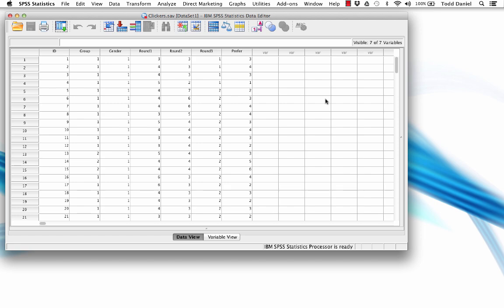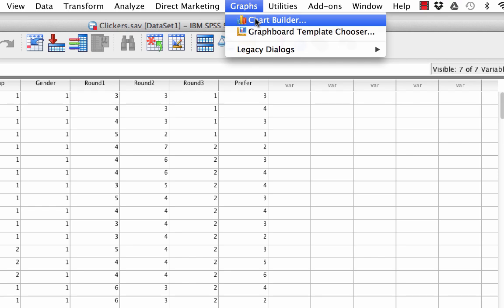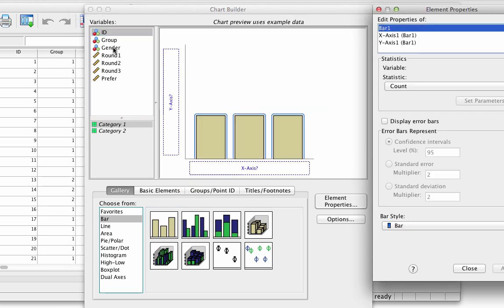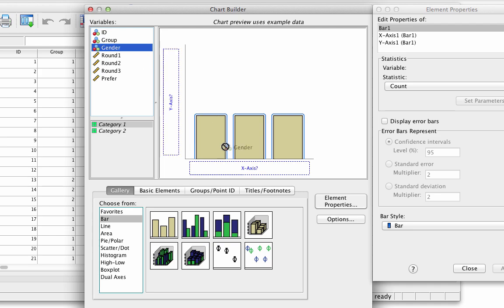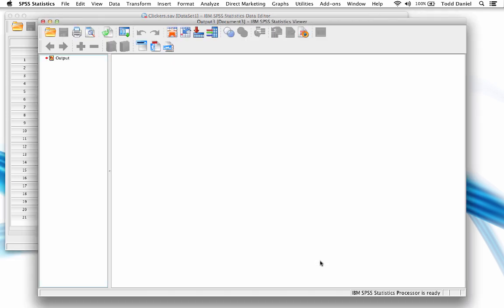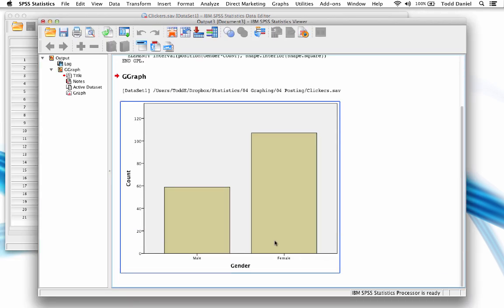Let's create a simple bar chart for gender. Begin by going to Graphs, Chart Builder. In the gallery, bar is selected, so drag simple bar up into the canvas. We can put gender in the x-axis drop zone, and for now just click OK. Here's what we find. It is a bar chart, but we get the count of males and females. I think we can do better. Let's do a percentage instead.